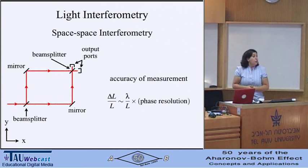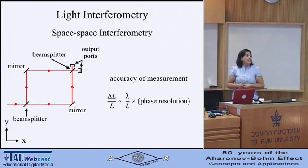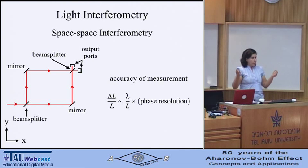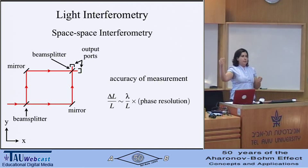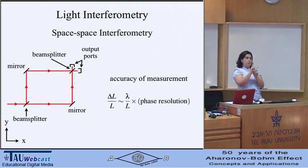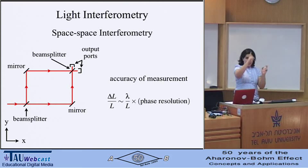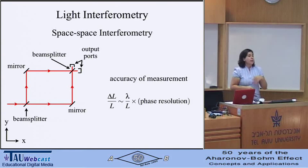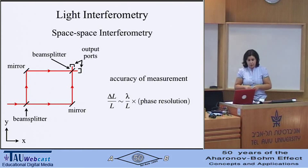Atom interferometry is very similar to light interferometry. In light interferometry you take a laser beam, with a beam splitter you split it into two parts that take different paths. With mirrors these beams are made to reconverge and interfere after a final beam splitter.